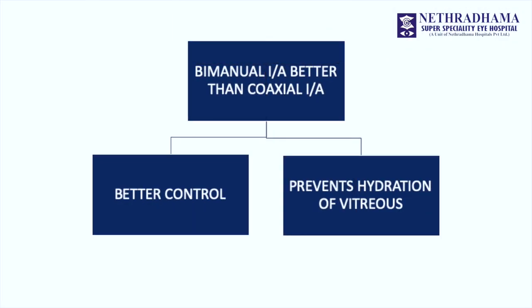The other aspect is to use a bimanual IA rather than a coaxial IA. This prevents hydration of the vitreous and you can remove the cortex in a more controlled manner. Cortical removal is always done after completing the vitrectomy and removing the vitreous. If there is vitreous in the anterior chamber, it is difficult to remove the cortex.